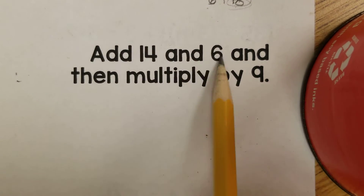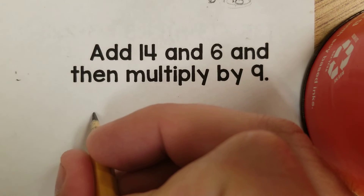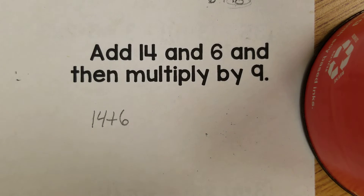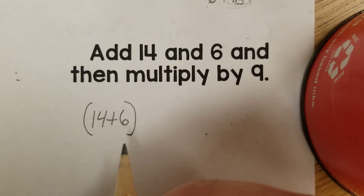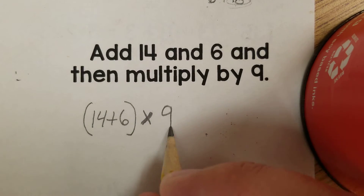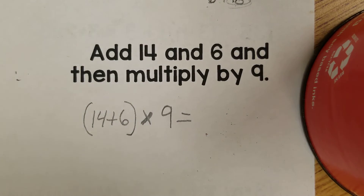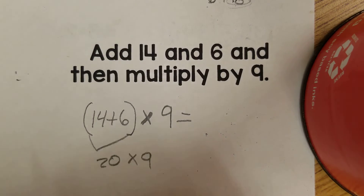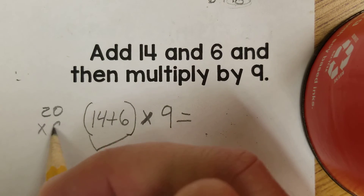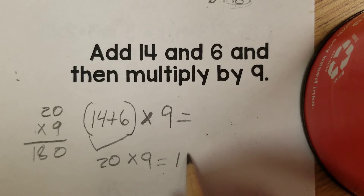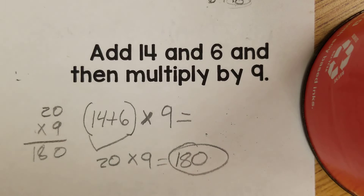This one says to add 14 and 6, then multiply that by 9. I have to do the addition first, then multiply by 9. PEMDAS says to do the parentheses first: 14 plus 6 is 20, then times 9. So 20 times 9: 9 times 0 is 0, 9 times 2 is 18. Our answer is 180.